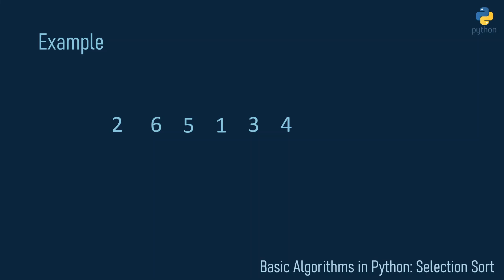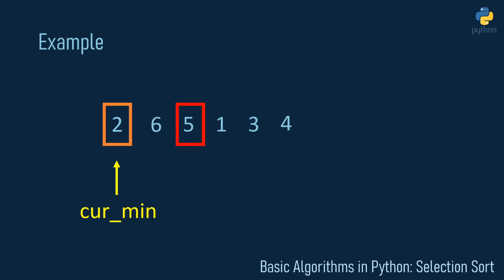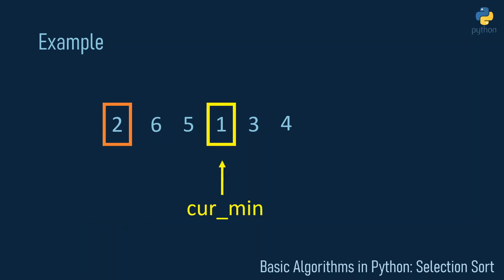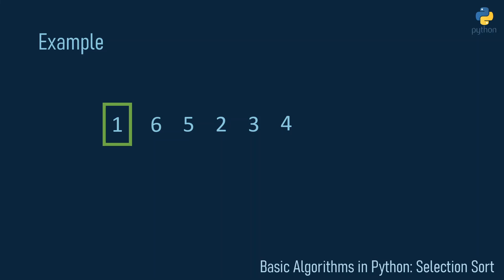Selection sort implements this idea by starting with the first element, marking it as the current minimum, and then iterating through the whole list in an inner loop to see if there's an element less than two. It checks six — not less than two. Five — not less than two. Then it finds the one and marks it as the current minimum. It checks three — not less than one. Four is greater than one. After the iteration, we know one is the minimum of the whole list, so we swap the one and the two.